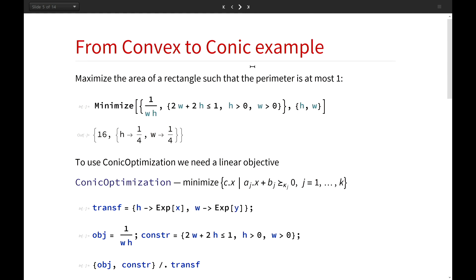I won't talk much about modeling this year — in my last year's talk I discussed transformations from convex to conic form in more detail. Now I'll give just one example since it's related to some new functionality. Let's maximize the area of a rectangle such that the perimeter is at most one. This is the same as minimizing one over the area, a simple example that could be solved by hand but which we want to transform into conic form.